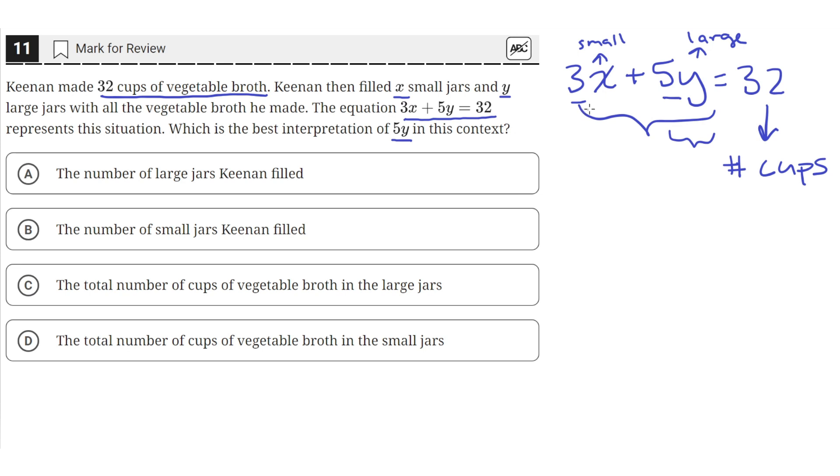When we add that with the total number of cups being kept in small jars, that will give us the total number of cups. Because all the cups are either in small or large jars, and the quantity 5y tells us how many of those cups are in the large jars.